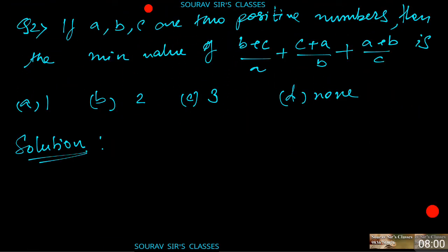Question 2: If a, b, c are three positive numbers, find the minimum value of (b+c)/a + (c+a)/b + (a+b)/c. Option A: 1, Option B: 2, Option C: 3, Option D: None of the above.